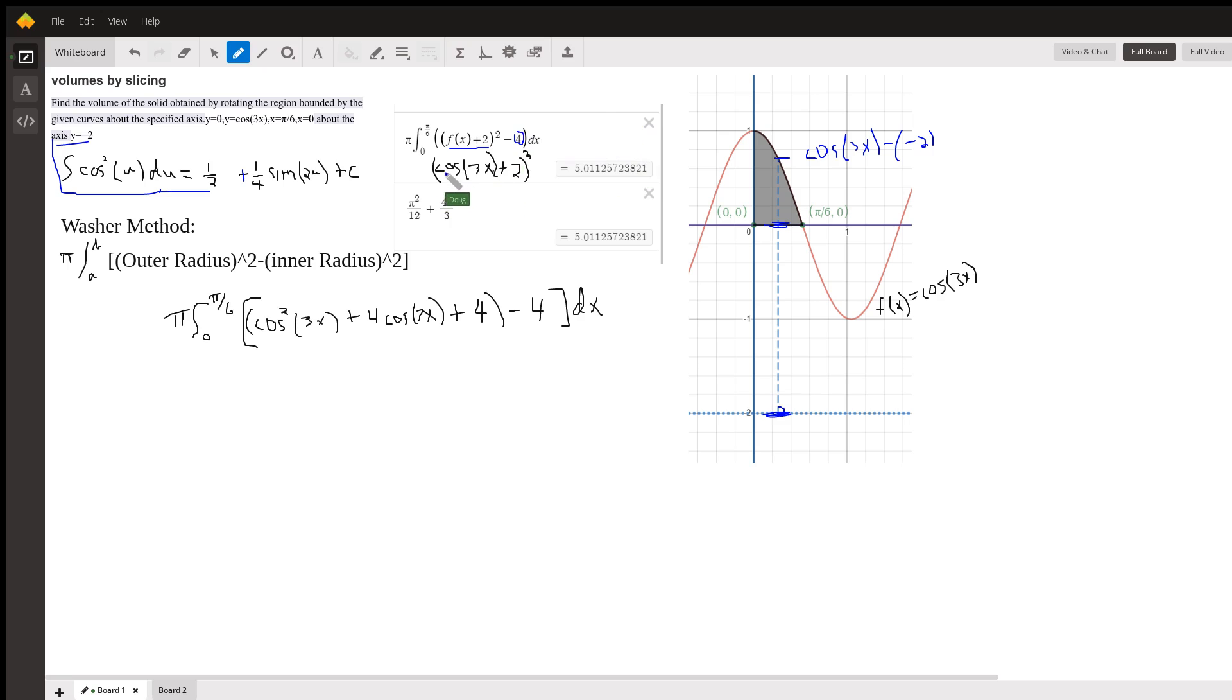And if I replace f of x with the cosine of 3x, I have the cosine of 3x plus 2, the quantity squared. What I've done is squared that binomial right here.